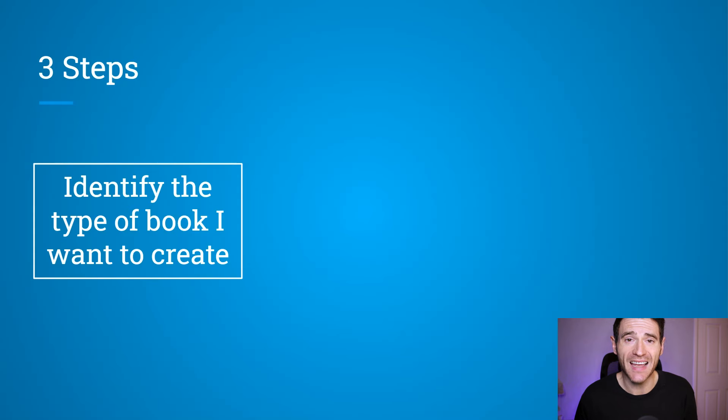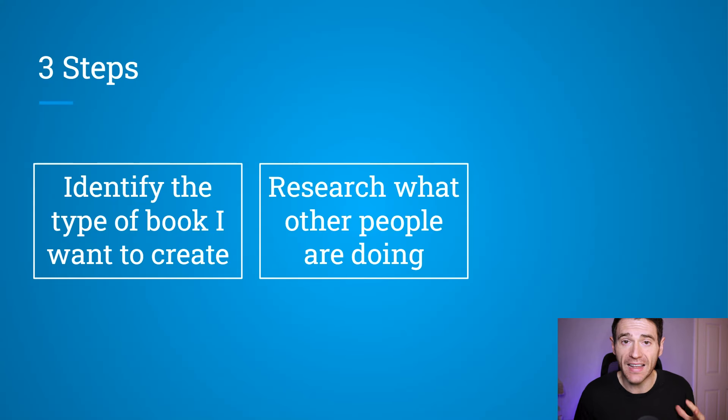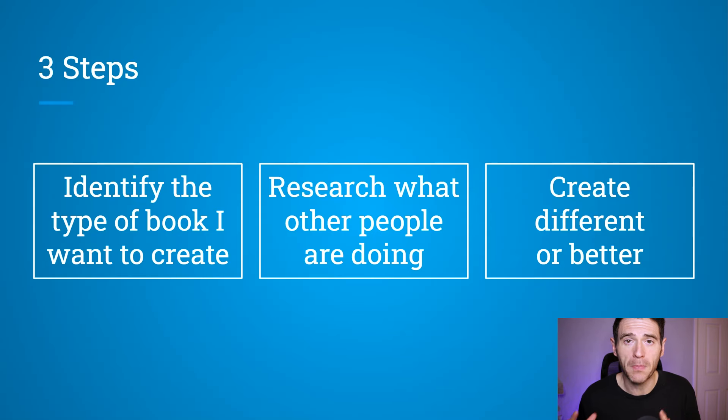To summarize, there are three steps to creating books that sell on Amazon. First, identify the type of book you want to create based on your available tools — this helps you create the best book possible. Second, research what other people are doing: look at what's selling and what's performing well. Third, find the opportunities to create something different or better. When I first started on Amazon KDP I was just creating whatever I wanted, and the majority weren't selling — either because they weren't getting enough traffic, there was too much competition, or I was just creating more of what was already out there without differentiating or improving.